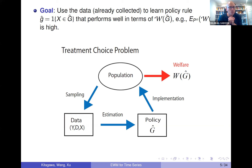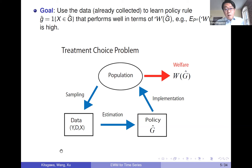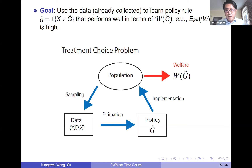A clarification: the policy here is restricted to deterministic policies, meaning upon observing x the choice is either one or zero. Of course, we could think about randomized policies — where conditional on observing x, we still randomize with some probability — but we are not considering that here.